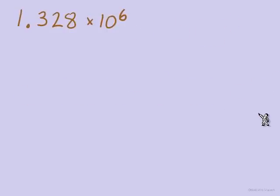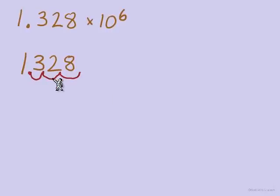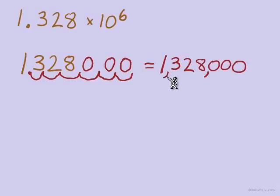Now let's talk about going in the opposite direction: starting with a number in scientific notation and writing it in standard form. We take the digits 1.328 and understand the decimal point moves for each multiplication by 10. Starting right behind the 1, we move it six places. After the first three places, we've run out of digits, so we add extra zeros for the remaining jumps. That gives us 1,328,000.